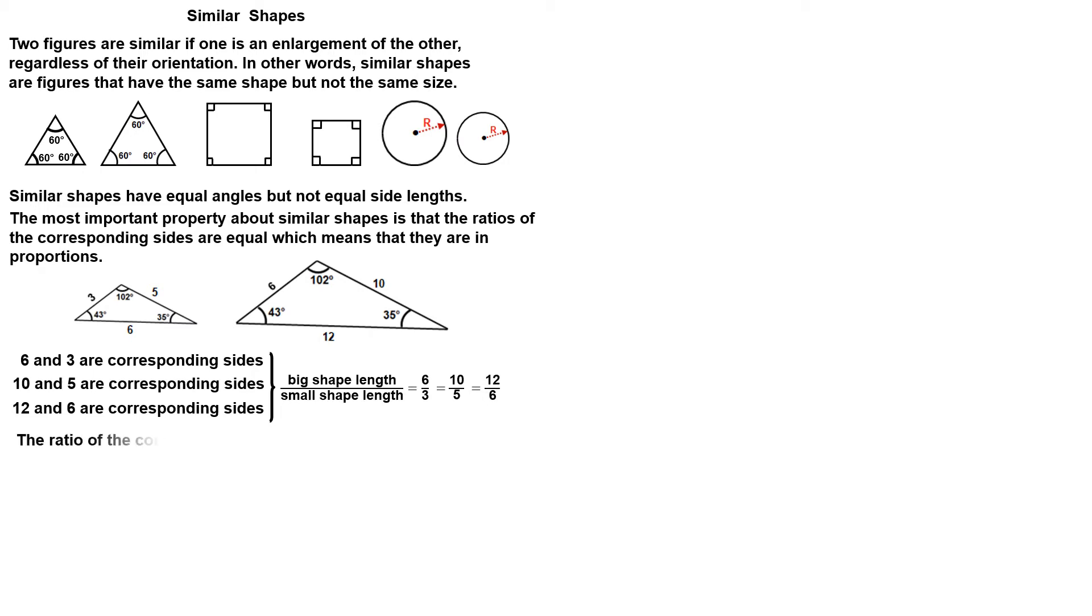The ratio of the corresponding sides is called scale factor. The size of an enlargement or reduction is described by its scale factor. For example, a scale factor of 2 means that we can get the big triangle from the small triangle by multiplying each side by 2.